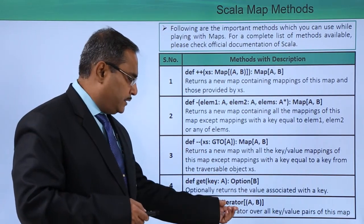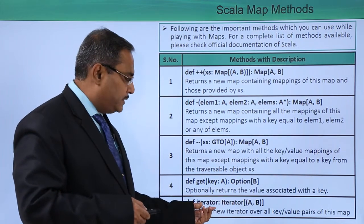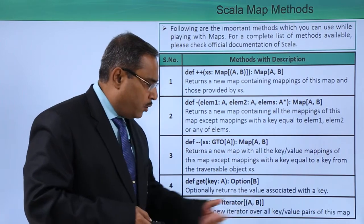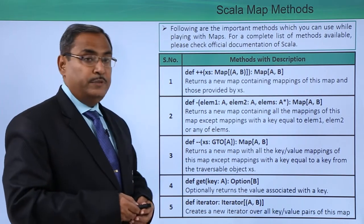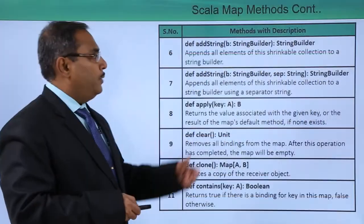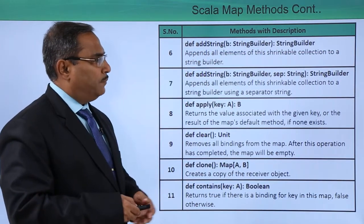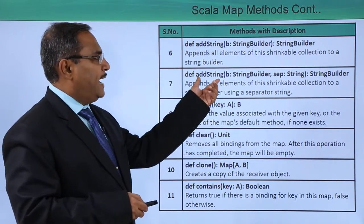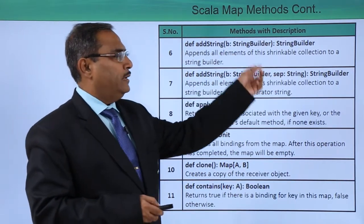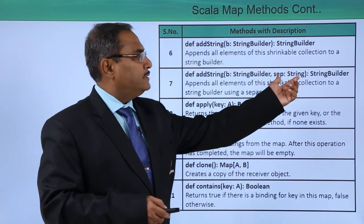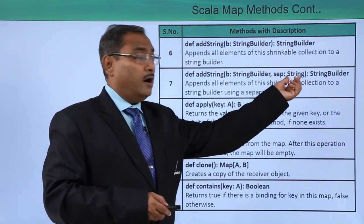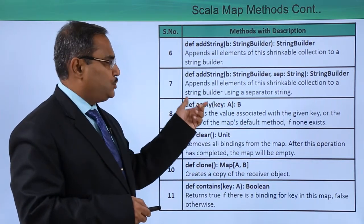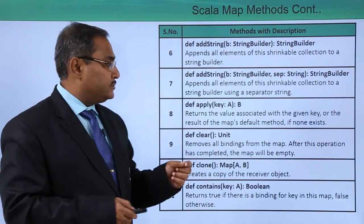The iterator method creates a new iterator over all key-value pairs of this map. We are having addString, which appends all elements of this shrinkable collection to a string builder object. There is also an addString variant with a second input parameter which is a separator of type String, so it appends all elements using a separator string.